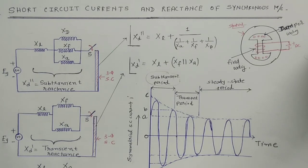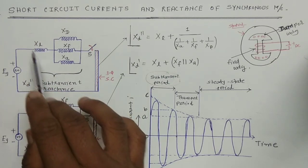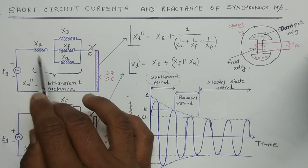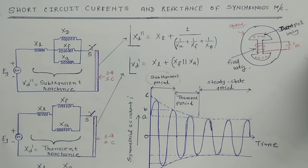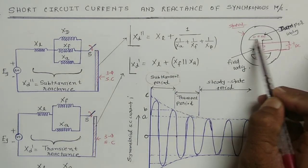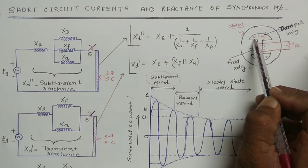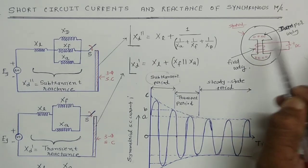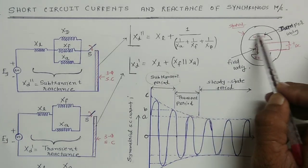Synchronous machine has winding so that it has reactances — that is leakage reactance XL. Now, what is damper winding? In synchronous machine, damper winding is used for reducing hunting effect and for self-starting. In the case of alternator, that is the pole shoe, aluminum or copper bar conductors are put in slots and connected together. This is damper winding.